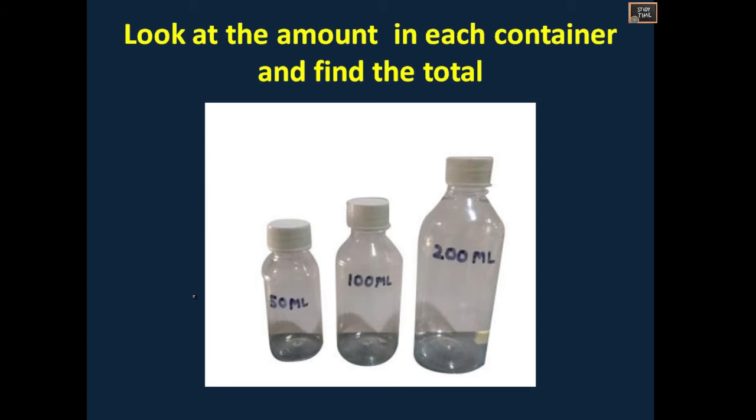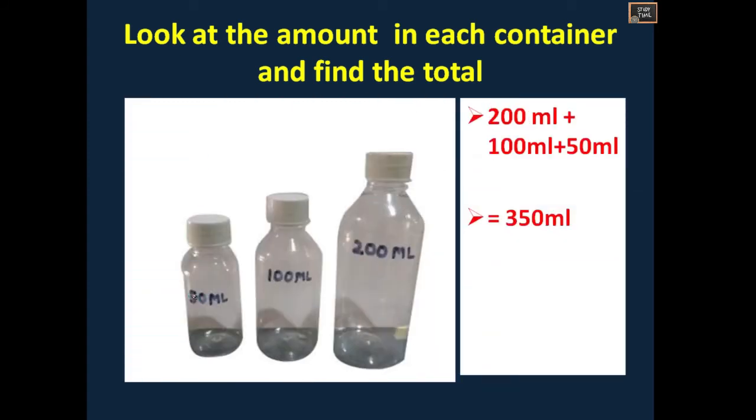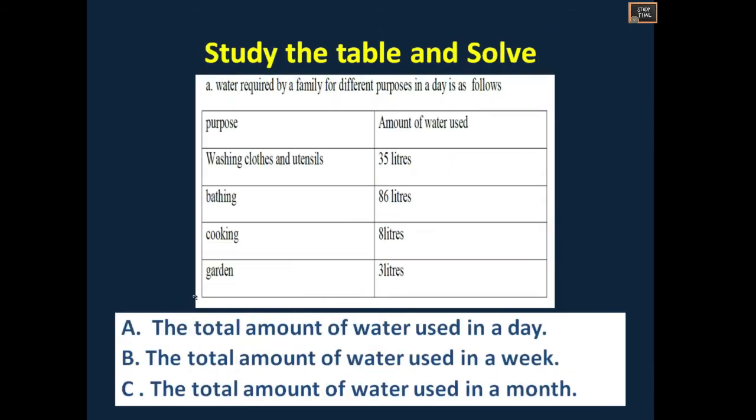Your time starts now. Look at the amount in each container and find the total. The answer for this is 200 ml plus 100 ml plus 50 ml is 350 ml.